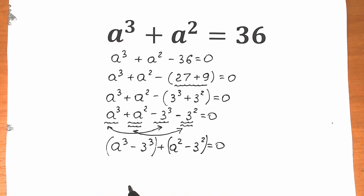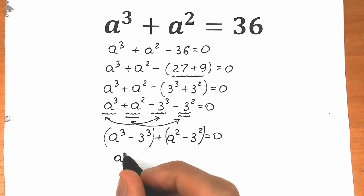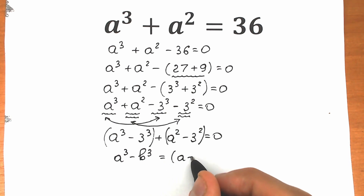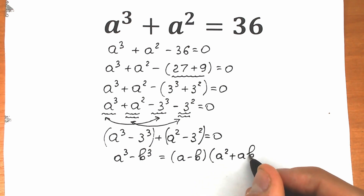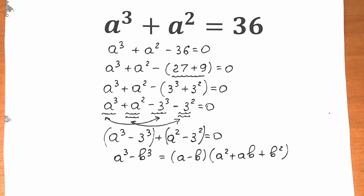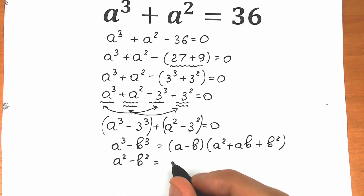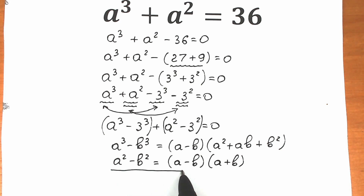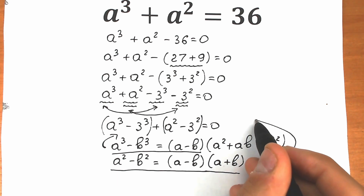Looking closely, a³ - 3³ is a difference of cubes. The formula is: a³ - b³ = (a - b)(a² + ab + b²). Similarly, a² - b² is a difference of squares: a² - b² = (a - b)(a + b). We need both of these formulas right now.